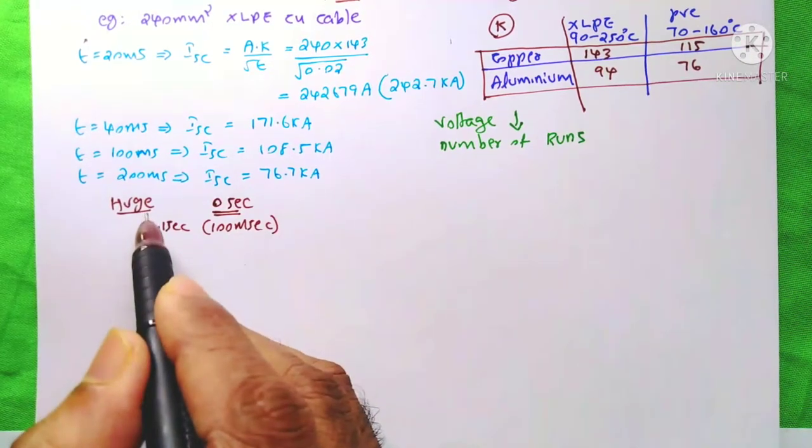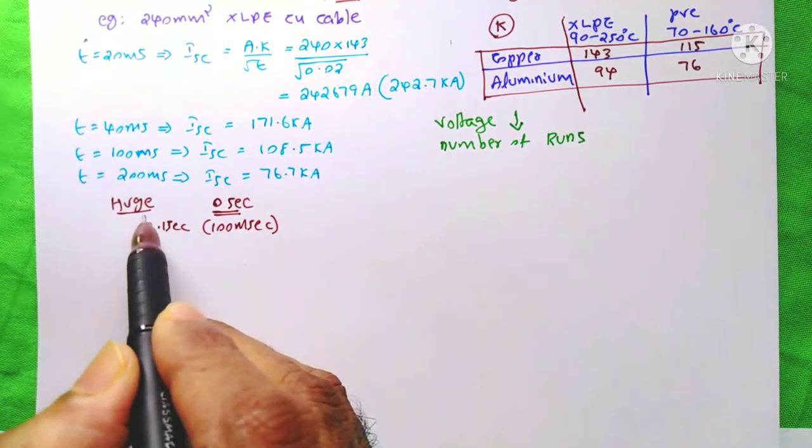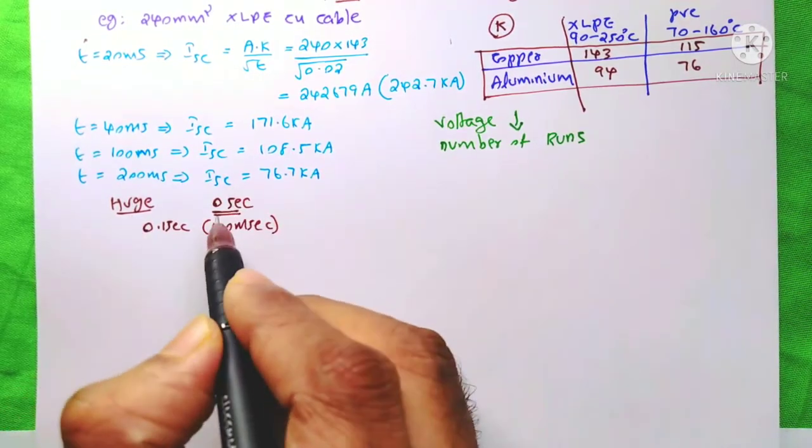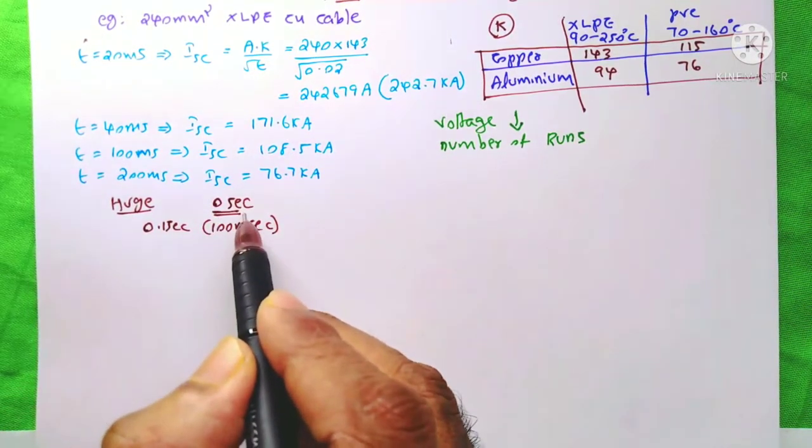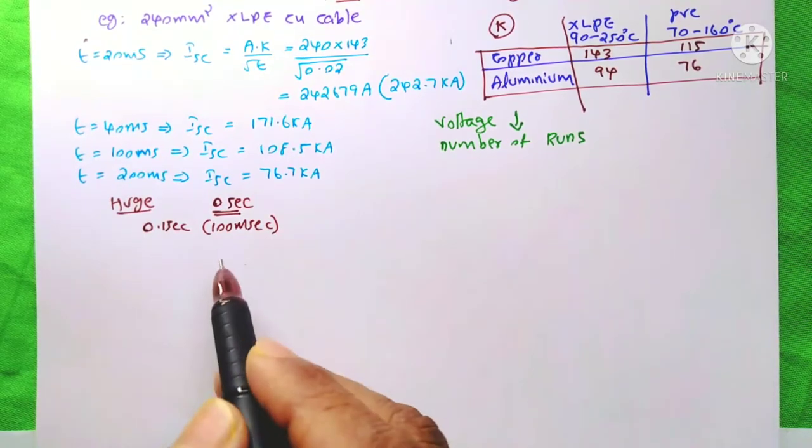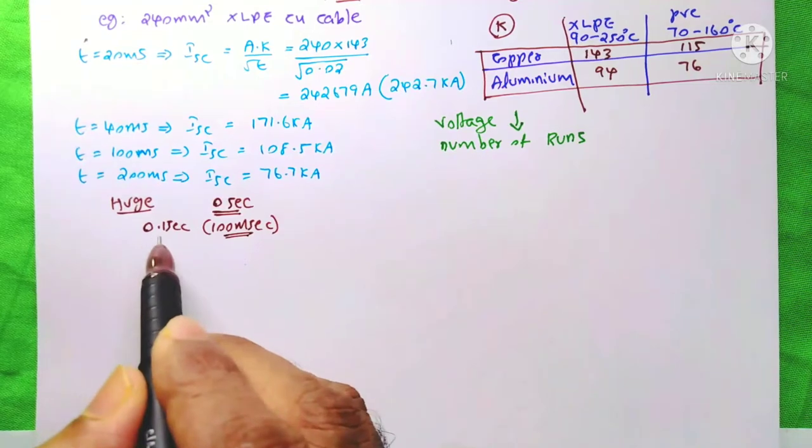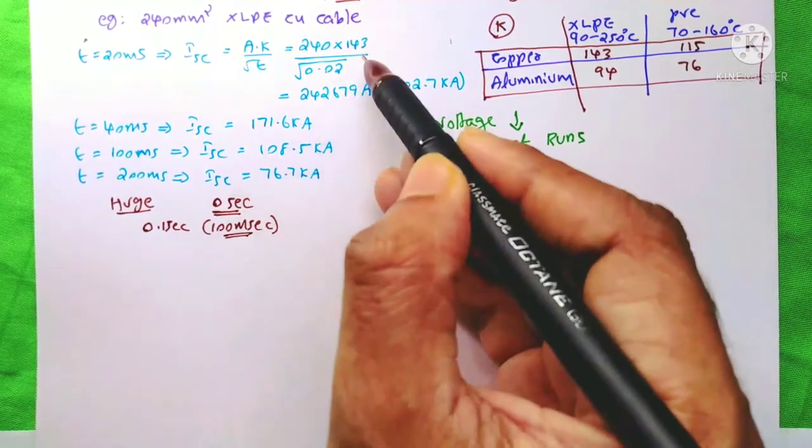When huge short circuit appears on a system, our circuit breaker will trip instantaneously without any time delay. But I recommend you to always take 100 ms, that means 0.1 seconds for this calculation.